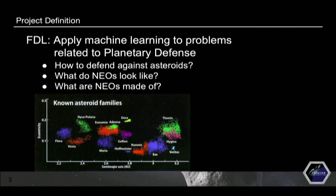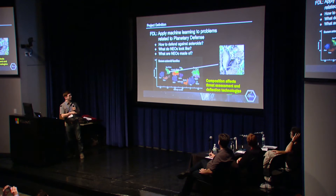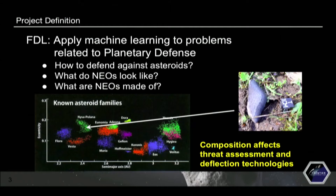We're interested in the question of what NEOs are made of. There are many different known asteroid families, and these asteroid families feed the near-earth objects that would be threatening Earth. It's critical to understand what they're made of because that affects what type of defense mechanisms to use — how an asteroid responds to a kinetic impactor depends on its material properties. It also affects threat assessment: based on material properties, it affects how it would detonate in the atmosphere. That's why we're so interested in determining what these asteroid families are made of.